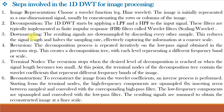Next we perform Downsampling, where we discard every other sample, capturing information at a coarser scale. Next is Recursion, where the decomposition process is repeated iteratively on the low-pass signal obtained in the previous step, creating a decomposition tree with each level representing a different frequency band or scale. The recursion stops when the desired level of decomposition is reached or when the signal becomes too small, and at this point the terminal nodes contain the Wavelet coefficients representing different frequency bands. The final step is Reconstruction, where to reconstruct the image from the Wavelet coefficients, an inverse process is performed.